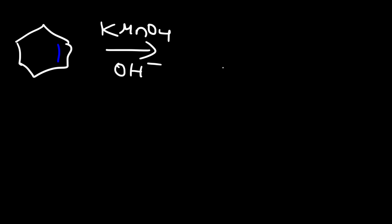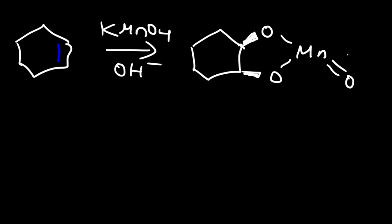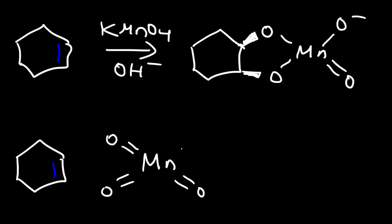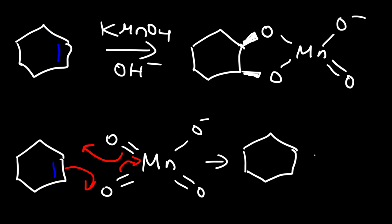Let's go back to this reaction. Once we have this alkene and react it with potassium permanganate under basic conditions, before we get our final product, we get a manganate ester. Here's the reaction mechanism for that step: the alkene reacts with the permanganate ion. The double bond breaks and connects between the two carbon atoms, and then a bond breaks, with those electrons going back to the manganese atom, giving the manganate ester — with a lone pair present.